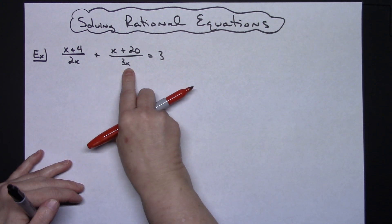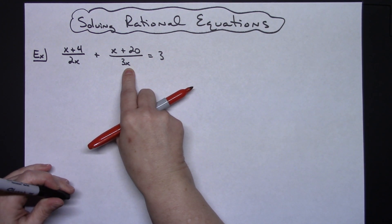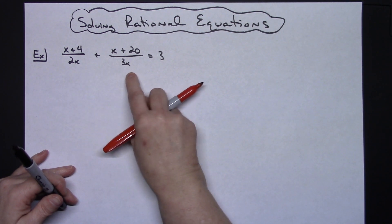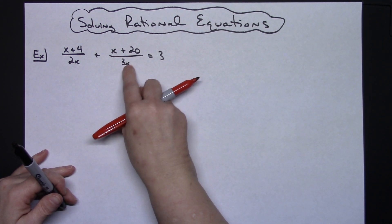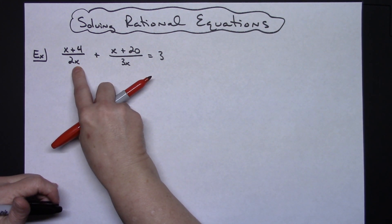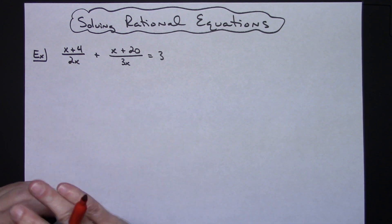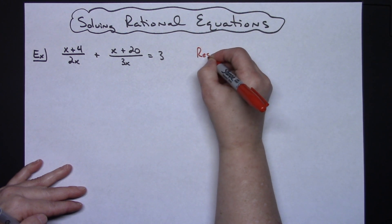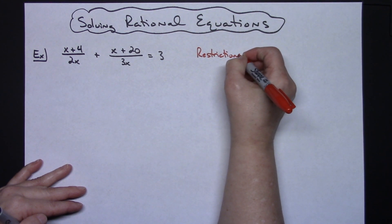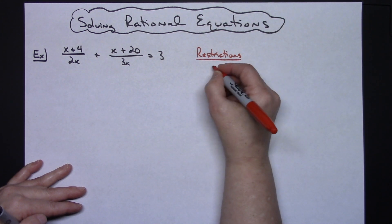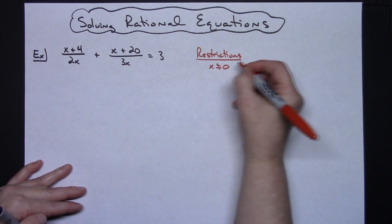Before I even start the problem I'm going to look at my denominators and figure out what my restrictions are. In this scenario, x cannot be 0 — if x is 0 then 0 times 3 would make that whole denominator 0, and we cannot divide by 0. Same thing over here: if x was 0, 0 times 2 is 0, that would make that denominator 0. So my restriction is x cannot be 0.